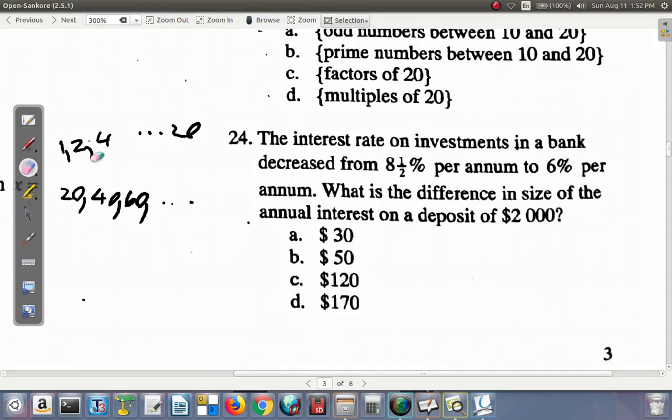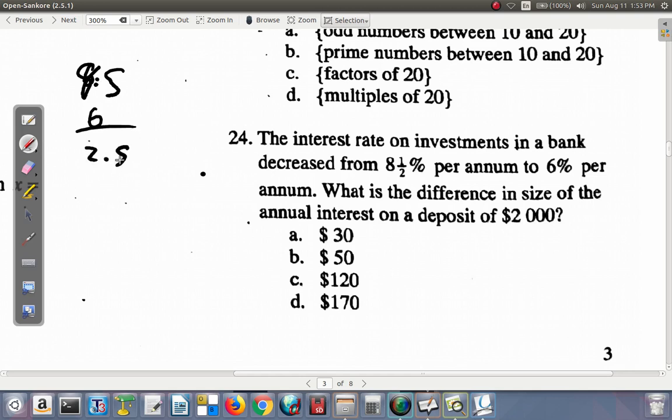What about question 24? The interest rate on investments in a bank decreased from 8.5% per annum to 6% per annum. What's the difference in size of the annual interest on a deposit of $2,000? We have 8.5 minus 6%, and that's going to be 2.5% difference.